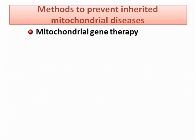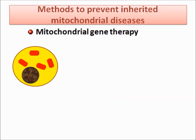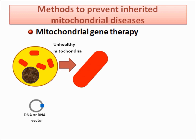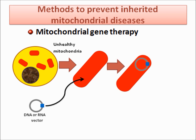Finally, in mitochondrial gene therapy, a cell with unhealthy mitochondria can be treated using an RNA or DNA vector, which contains a healthy copy of the gene responsible for the unhealthy mitochondria. Scientists include it in all mitochondria to try to avoid the illness caused by the mitochondrial mutant gene.